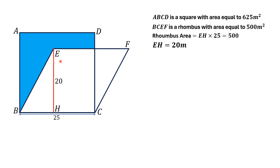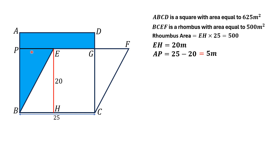Now, let me draw a line segment from point E to the side AB to complete a rectangle APGD. From here, AP is equal to — this whole length is 25 and this length is 20 — so AP is equal to 25 minus 20, that is equal to 5 meters.